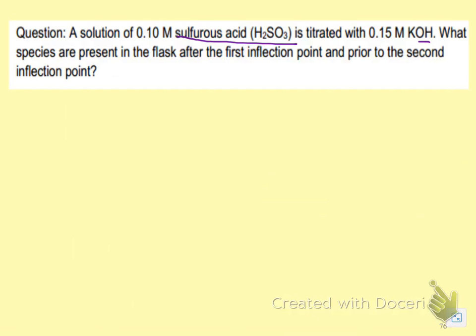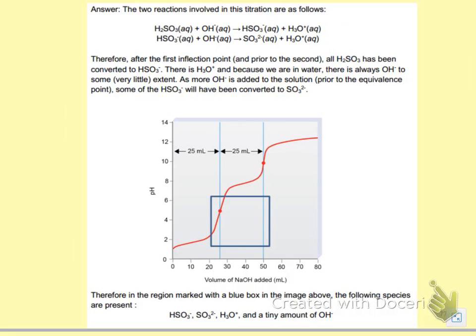We want to know what species are present after the first inflection point and prior to the second inflection point. So let's take a look at what we have. After the first inflection point but prior to the second, we're in this region here.